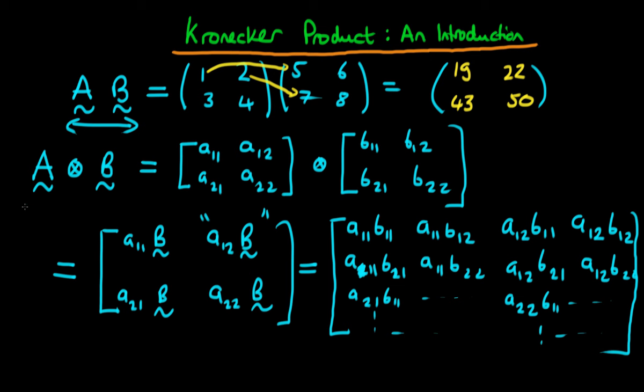So notice that we've taken two matrices which were themselves two by two and in taking the Kronecker product what we formed is we formed a matrix which is four by four.